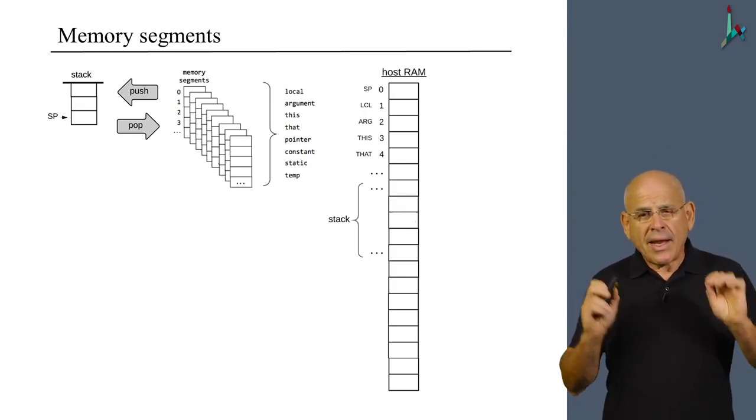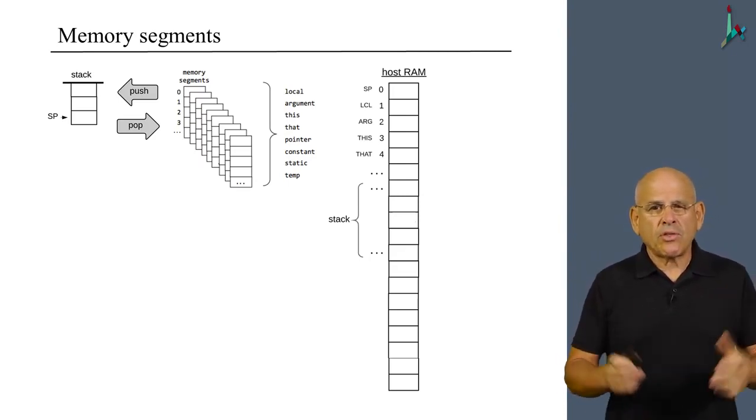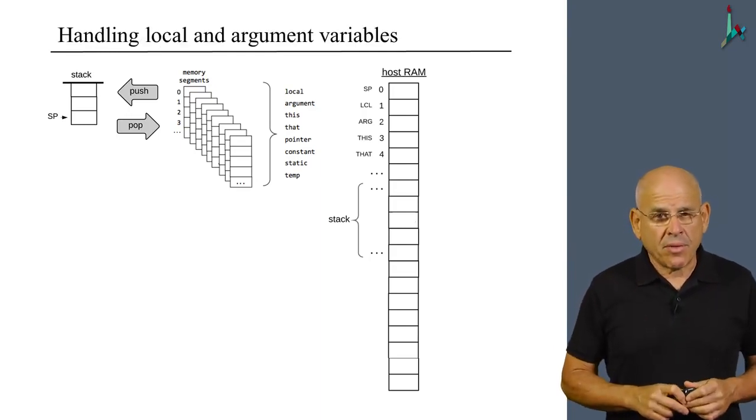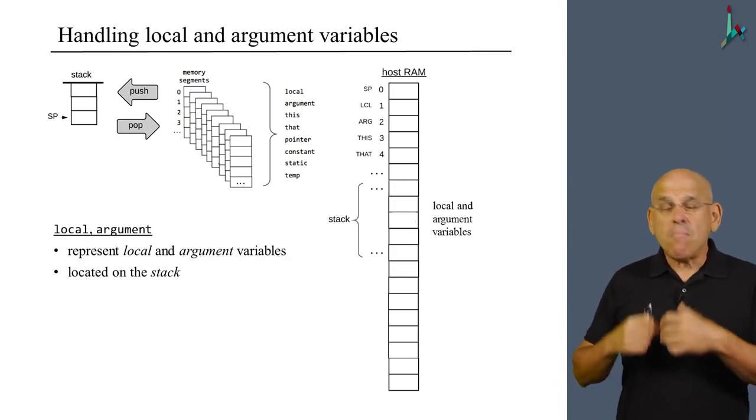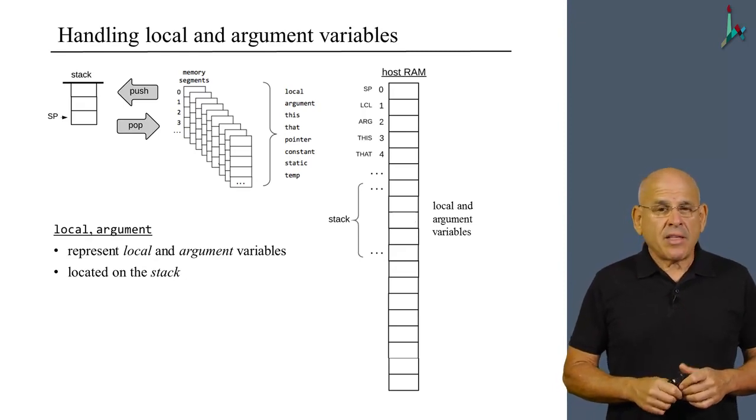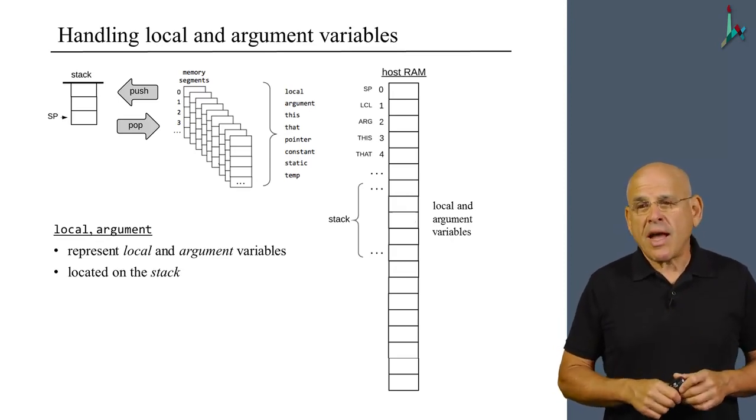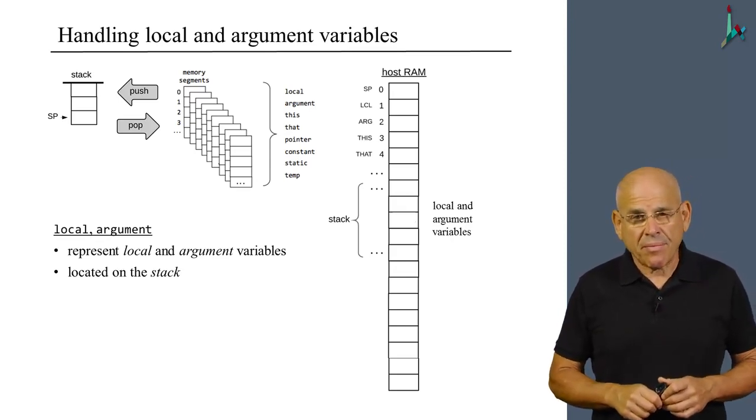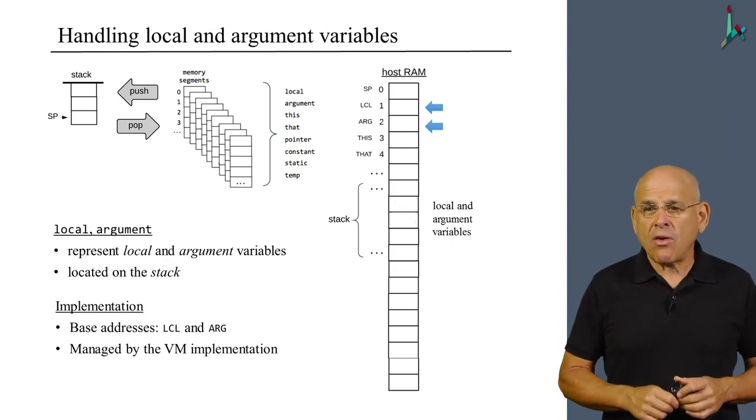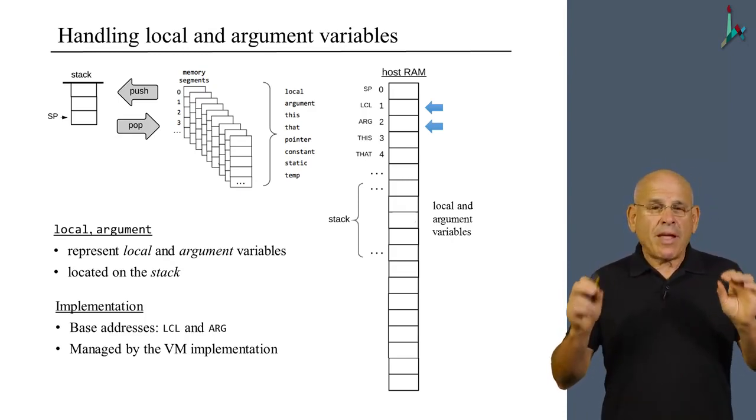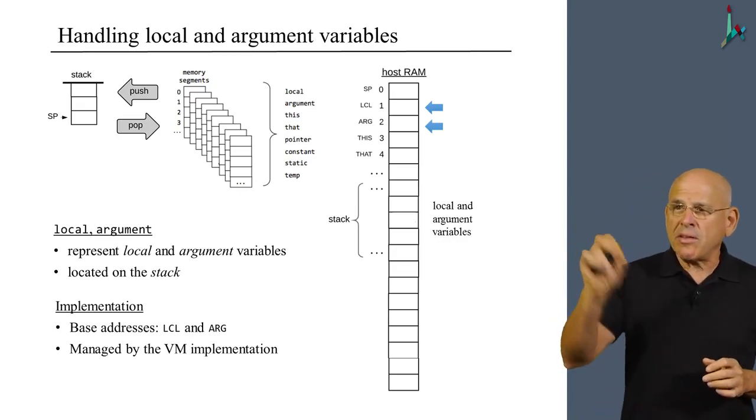Let us say a few words about how this architecture is used in order to support the notion of local and argument variables. Well, local and argument variables are stored on the stack and managed by the VM implementation. As far as the VM code is concerned, we can access them using the local and argument segments respectively. And once again, they are managed by the VM implementation on the stack.